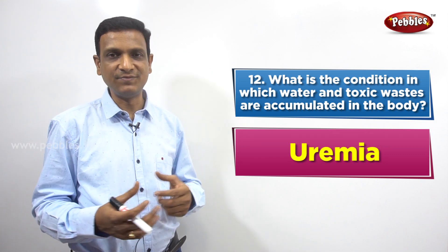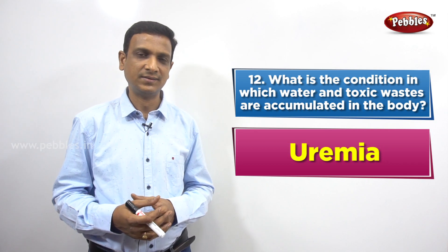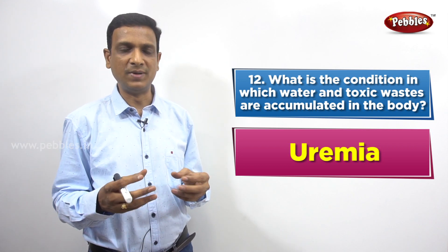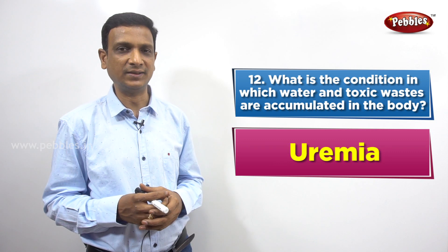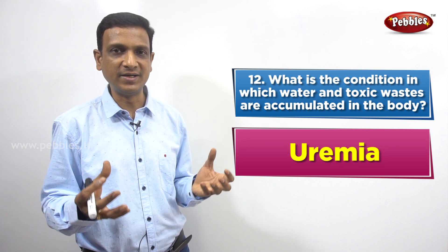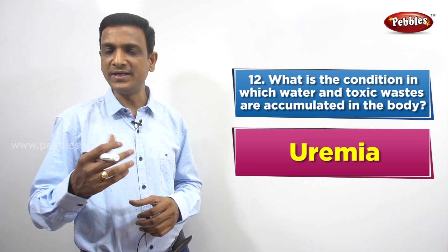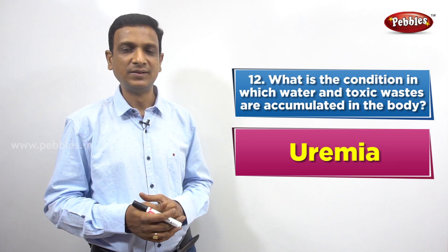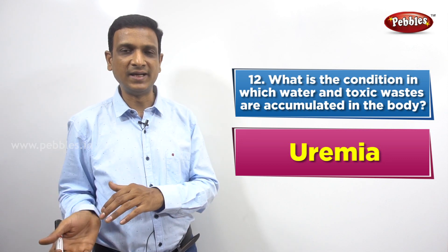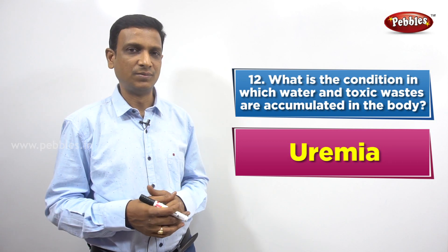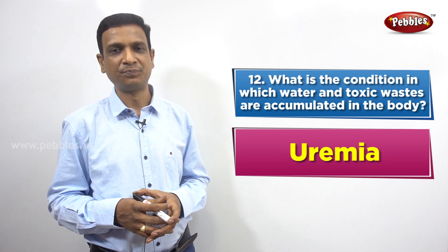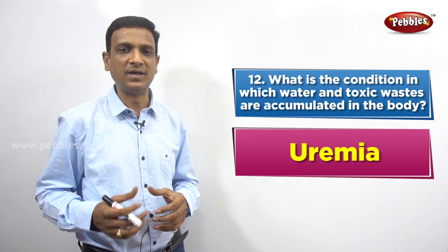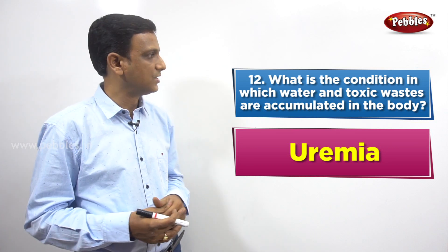When uremia happens — in end stage renal disease (ESRD) — the kidneys stop functioning almost completely. The blood is not purified or cleared of toxins and excess fluids, so these fluids and wastes get accumulated in the blood and body tissues. The solution is a treatment called dialysis, in which the blood is purified or filtered outside the body. The blood is taken to the dialyzing machine, purified, and again injected into the body. People suffering from uremia are given dialysis treatment to purify the blood.